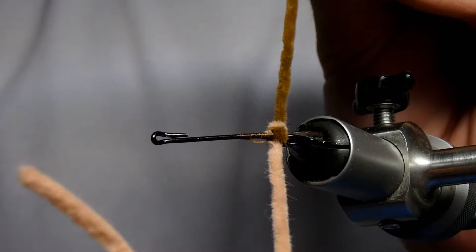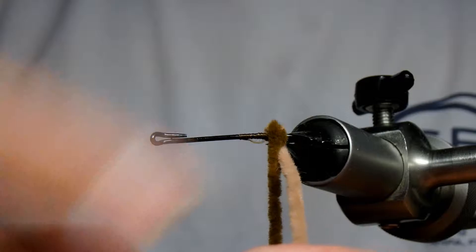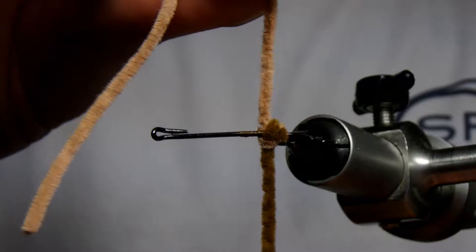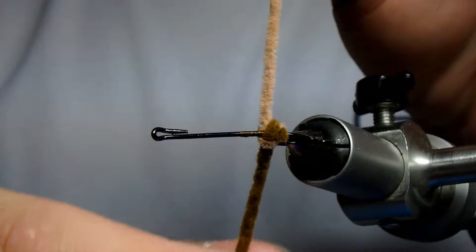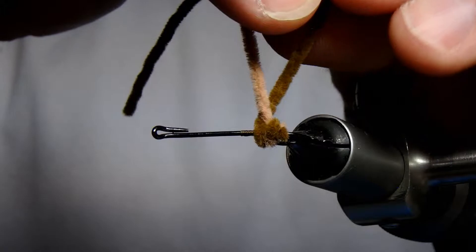So your strands have switched sides now. Go over the top with your darker strand, forward over the dark strand with the light strand, and underneath. It's important to keep tension on the light brown strand because that's what holds your darker brown strand in.